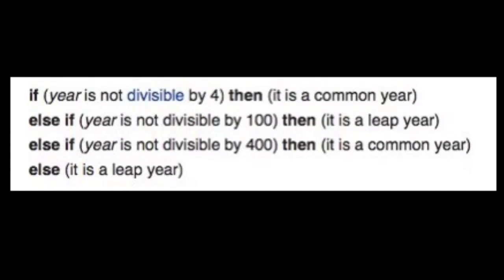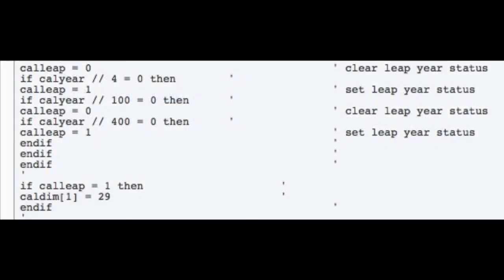So firstly, we were all lied to at school — a leap year is not every four years. There are a few more ways to qualify a year as a leap year or exclude it. Wikipedia provides a good definition of this, and this is the basic code that I've used to determine that.